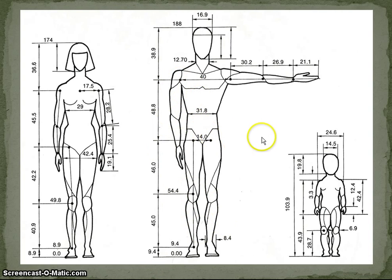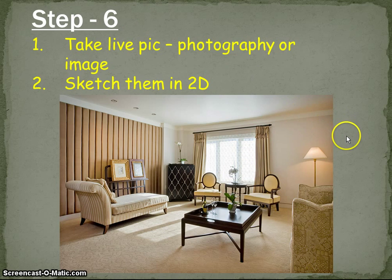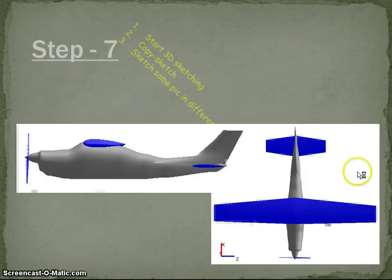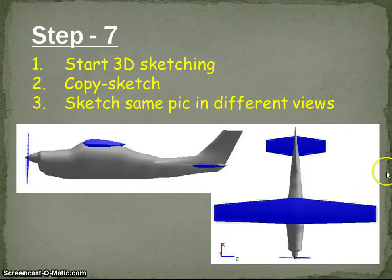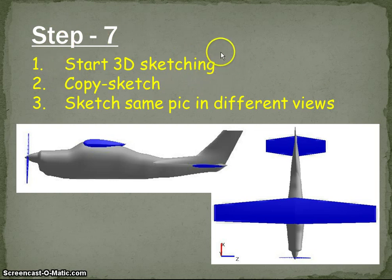In step six, instead of copying from an already drawn picture, take a real photograph and draw it in 2D — just put it in a two-dimensional way. This moves you forward from the previous step. In step seven, once you have some good knowledge of 2D sketching — objects, products, views — you advance to 3D, three-dimensional sketching. For example, take an object like an airplane sketch and draw it in different angles — top view, side view, back, front, left, right.